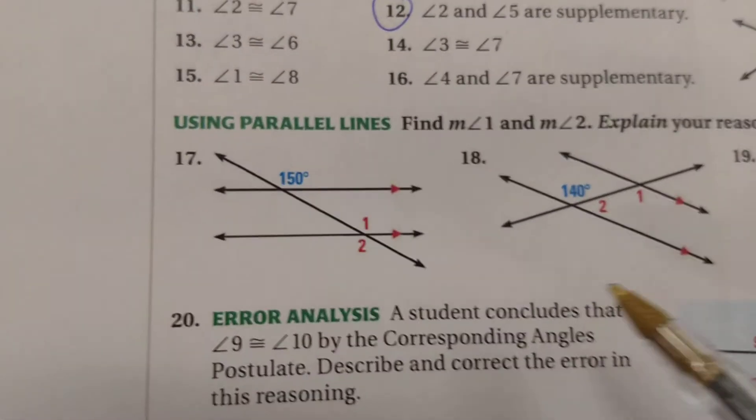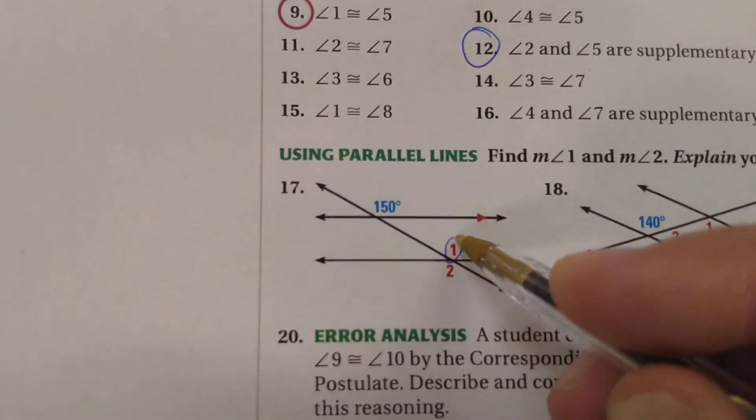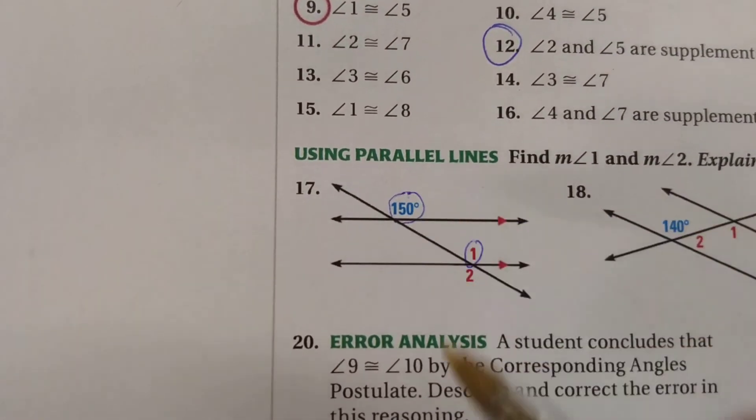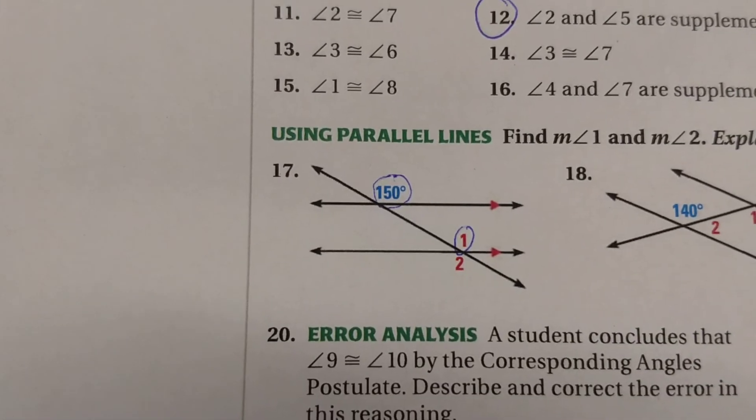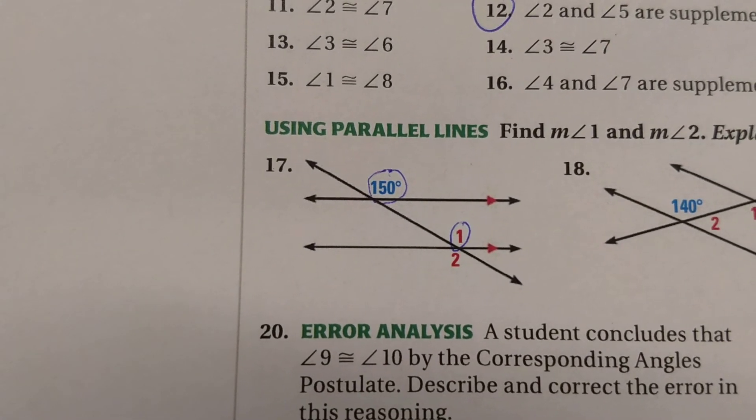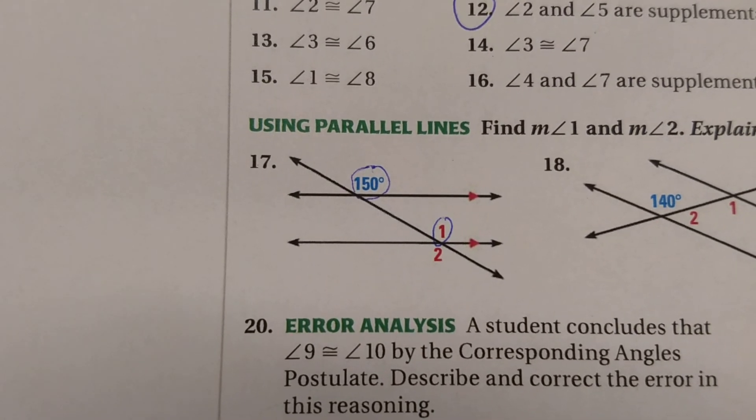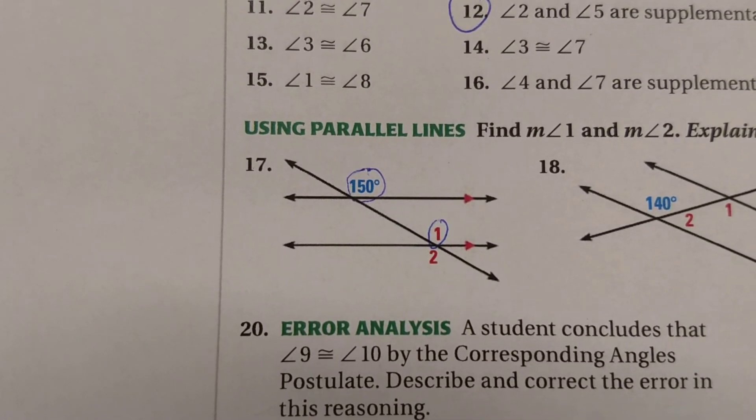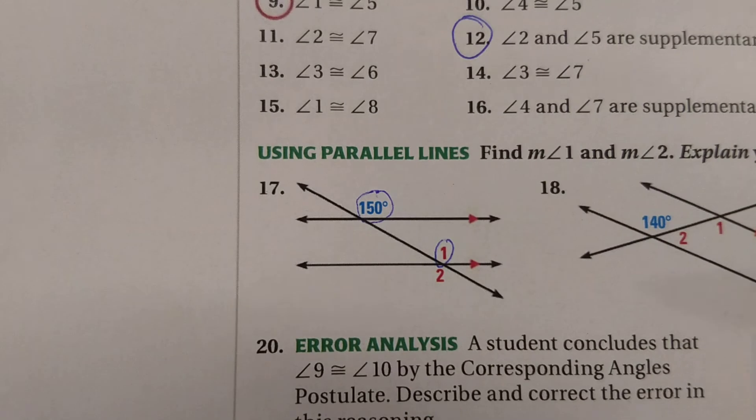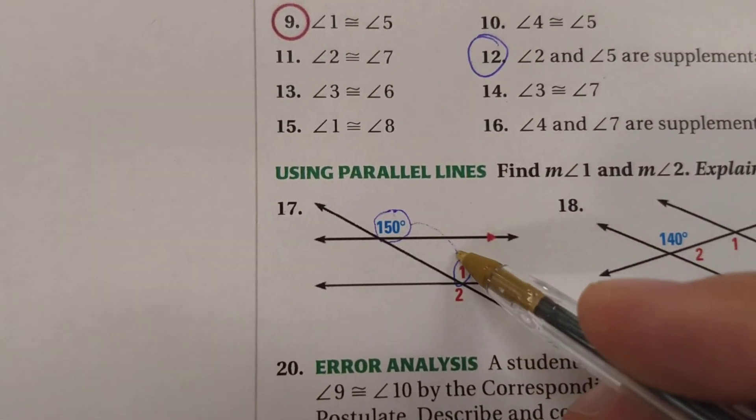So for example, if I look at angle 1 and the one that's shown to be 150 degrees, those two are a pair of special angles that we call corresponding angles. And what we know about corresponding angles is that they are congruent.